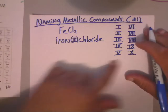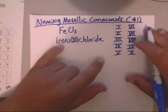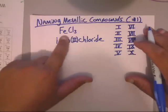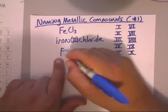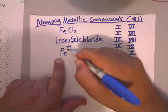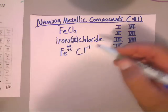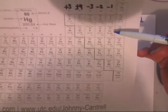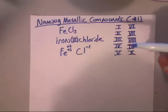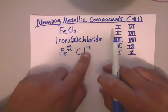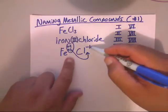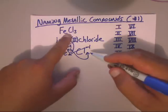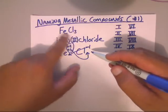This is iron(III) chloride. You understand iron and chloride, but the three is the hard part. Let me show you how you know this is iron(III) chloride. Iron has two versions: Fe²⁺ and Fe³⁺. Cl only has one version, which is negative one — it's always negative one because of its column. The subscript numbers cross over: the two from Fe comes down behind the Cl, and the three from Cl comes down behind the Fe, which tells us we have iron(III).